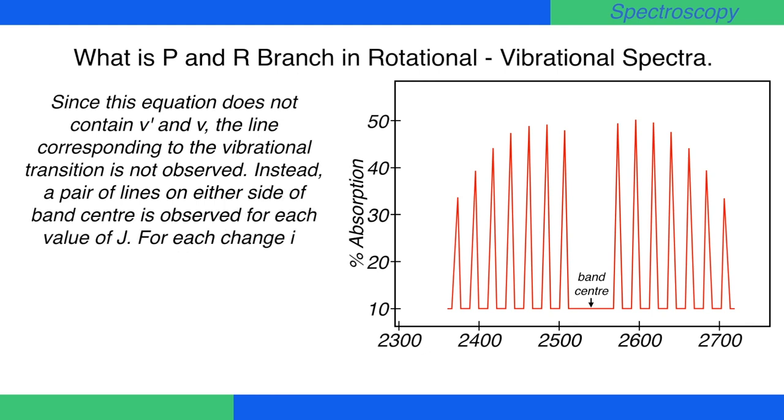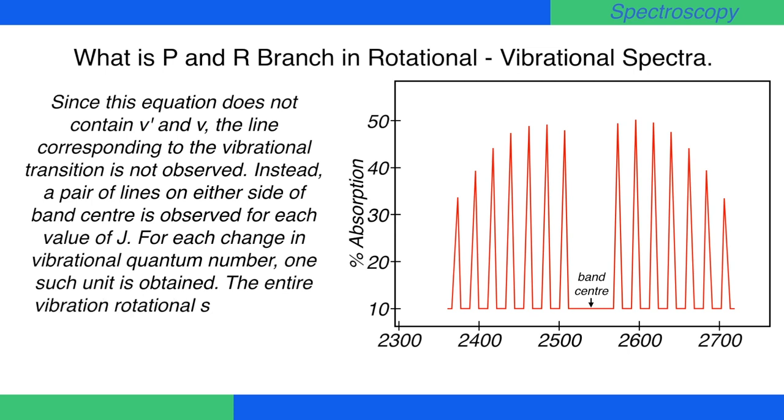For each change in vibrational quantum number, one such unit is obtained. The entire vibrational rotational spectrum will consist of a number of such units.